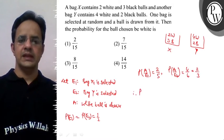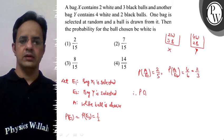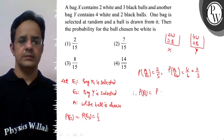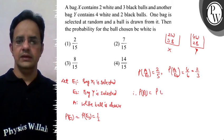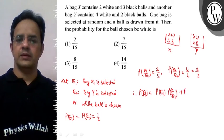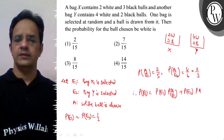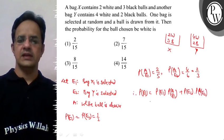Therefore the required probability is the probability of A, means drawing a white ball. And it is given by probability of E1 multiplied with probability of A by E1, plus probability of E2 multiplied with the probability of A by E2.